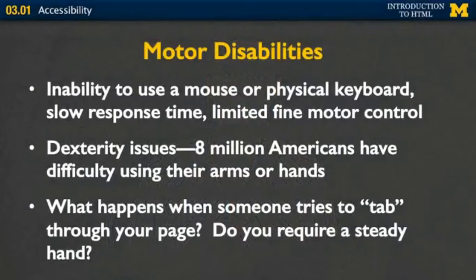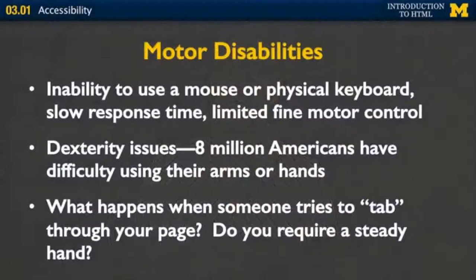One of my own personal issues is that of motor disabilities. There are many people who are unable to use a mouse or a physical keyboard. Maybe they have slow response time or just limited fine motor skills. Dexterity issues affect 8 million people who have difficulty using their arms or hands. But my guess is that most of us have had some issue with trying to use the web and not being quite able to do what we hope to do. One issue we talk about is what happens when someone tries to tab through your page — this is a very common way for people to navigate, but unless you're very careful, you can make it so that people tab through to nowhere.